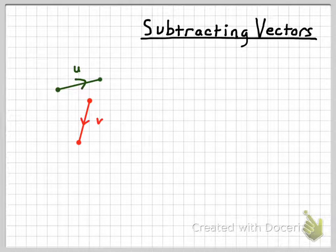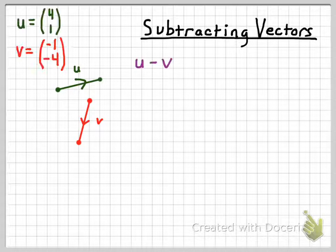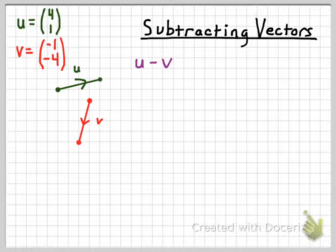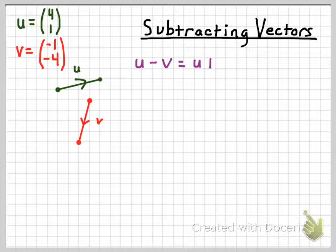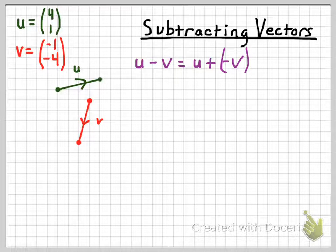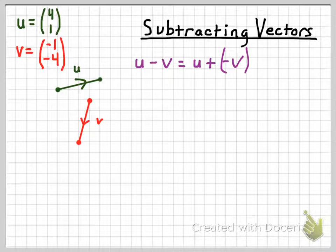Now let's look at what it means to subtract two vectors. Using the same vectors u and v, we want to find u minus v — again from both geometric and arithmetic standpoints. Geometrically, you can't physically subtract one vector from another in the typical sense. However, just as in algebra, you find u minus v by finding the sum of u with the opposite of v. So we add the opposite of the second vector to the first.